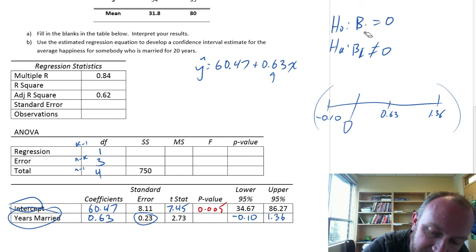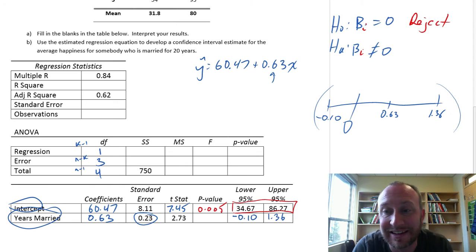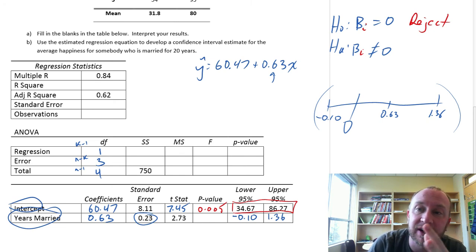So clearly, we can reject the null hypothesis for the intercept. So for our intercept term, for our intercept, we can reject. And again, we see that in this interval estimate. Clearly, there's no zero in there. So clearly, that intercept is between 35 and 86. It's not zero at that level of confidence. So that p-value confirms that.